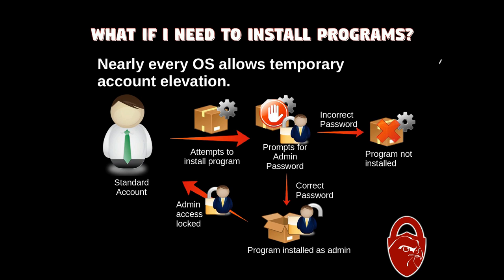The same thing works on computers. Say we have a standard user who wants to install a program — it doesn't matter what it is: iTunes, Chrome, Firefox, a video game, a spreadsheet program, you name it. He'll attempt to install the program, the operating system is going to check his permissions and determine he can't do this, so it'll prompt for the admin password — which is basically the worker asking the boss: hey, can you do this for me?